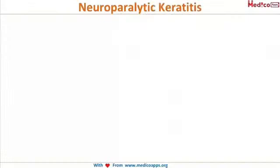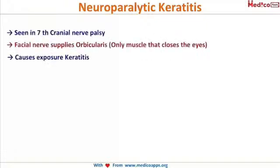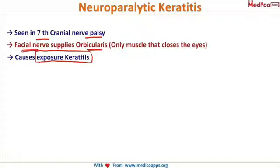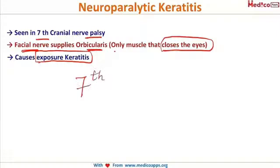There are two types of keratitis to share. The first is neuroparalytic keratitis, which occurs due to palsy of the seventh nerve. It is a kind of exposure keratitis — the cornea is exposed to the external environment because the facial nerve (seventh nerve) supplies the orbicularis, the only muscle that closes the eye. When the lid is paralyzed, the cornea is exposed, causing exposure keratitis, termed neuroparalytic keratitis.